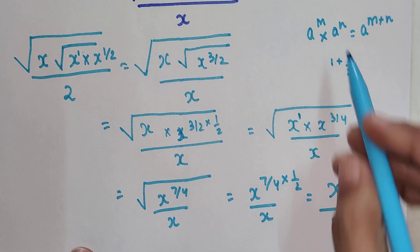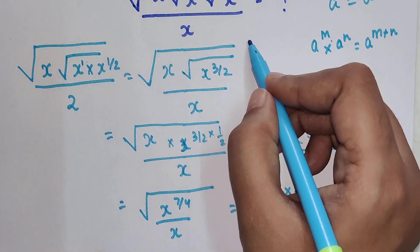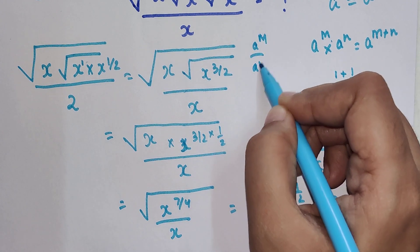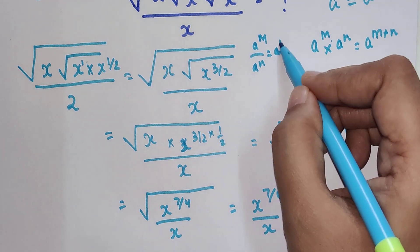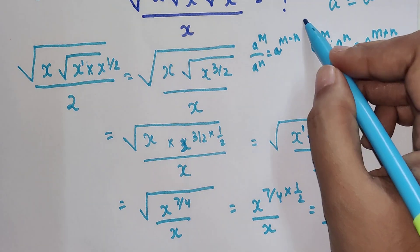Now please understand, just as this rule, we also have another rule which is: a raised to m upon a raised to n will be nothing but a raised to m minus n.